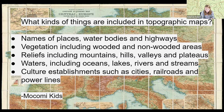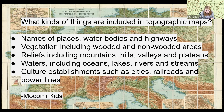A topographic map is essentially a map that has the earth put on a piece of paper, and many kinds of maps are topographic maps. Following along on a topographic map of a real location like Mount Adams would be really helpful when learning these concepts.